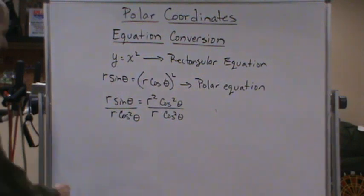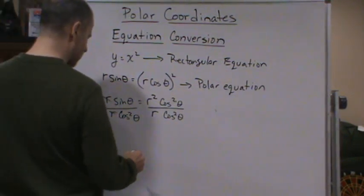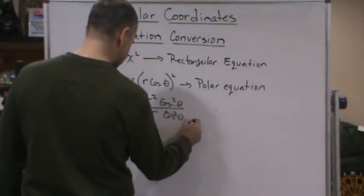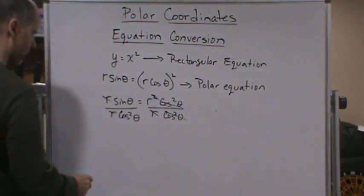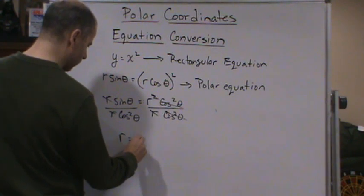And so now the r's are going to cancel here. Cosines obviously are going to cancel here. One of these r's is going to cancel with one of those r's. And so now we get r equals sine theta over cosine squared theta.